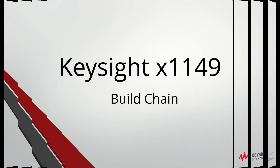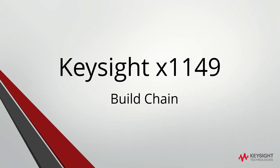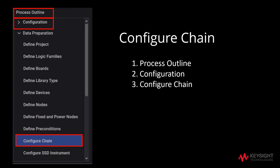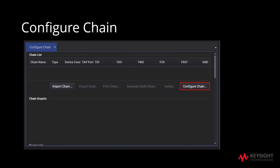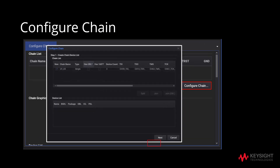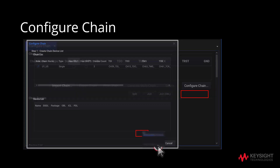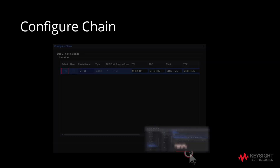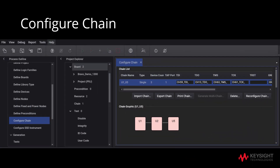Now we will proceed with building the chain. Under Process Outline, go to Configuration and click on Configure Chain. This will direct you to the Configure Chain tab. Click on Configure Chain here. We will now create the chain device list. Click Next. Following that, we will select the chain we wanted to create. For this case, we will check the box under Select. Thereafter, select Finish. We have finally created a chain, as shown in the chain graphic.